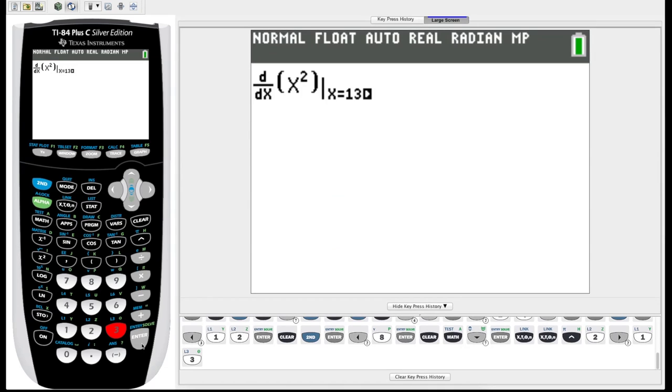So we're expecting it to be 2x, so 2 times 13. We're expecting 26, and we got 26.